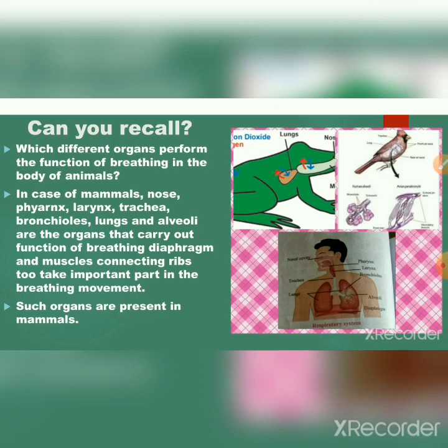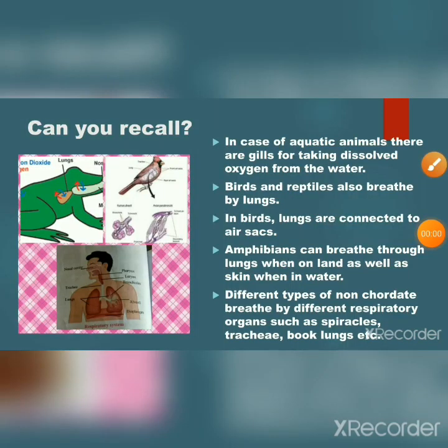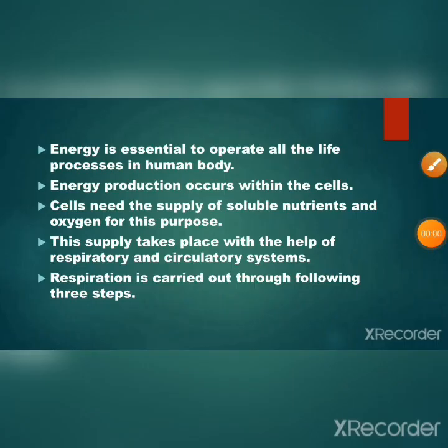Such organs are present in mammals. In the case of aquatic animals, there are gills for taking dissolved oxygen from water. Birds and reptiles also breathe by lungs; in birds, the lungs are connected to air sacs. Amphibians can breathe through lungs when on land as well as through skin when in water. Different types of non-chordates breathe by different respiratory organs such as parapodia, trachea, book lungs, etc.